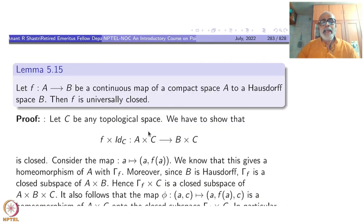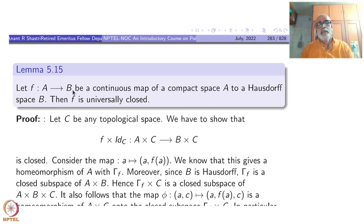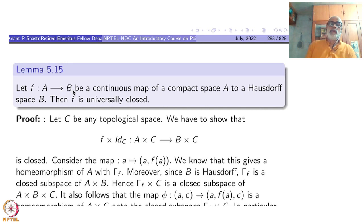Take any continuous function f from A to B, where A is compact and B is Hausdorff. Then f is universally closed. This must have rung a bell — right from part 1 we have been studying this kind of situation.